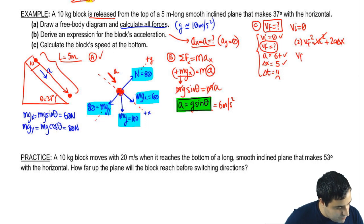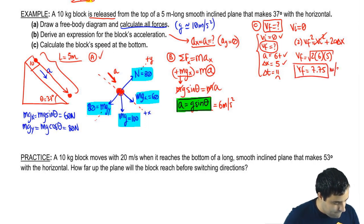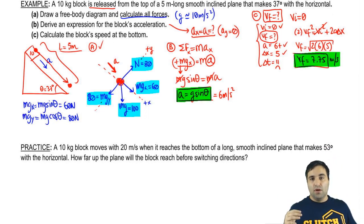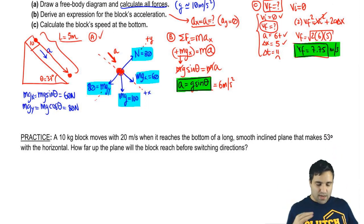So the final velocity would be the square root of 2 times a times delta x. A is 6. Delta x is 5. And the final velocity will be 7.75 meters per second. So that's it. Hopefully that makes sense. You absolutely have to know how to do this. This is just the beginning of how problems in inclined planes work.